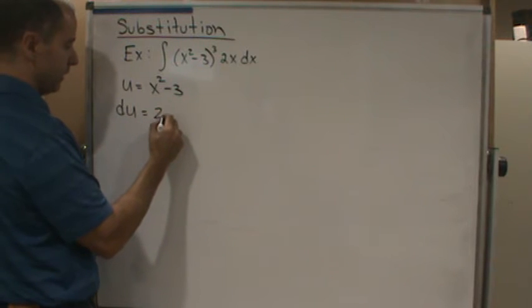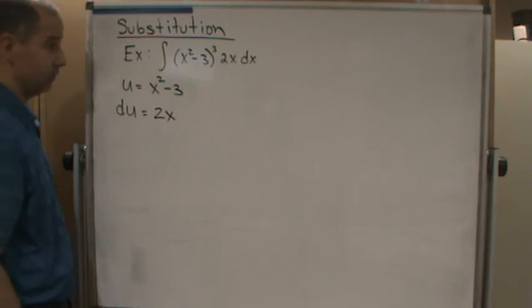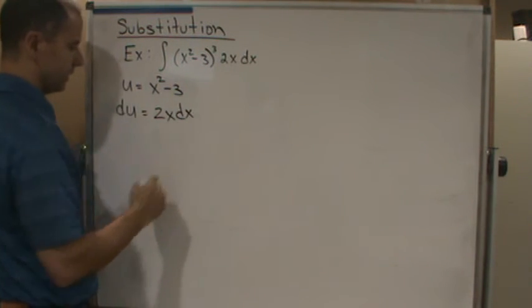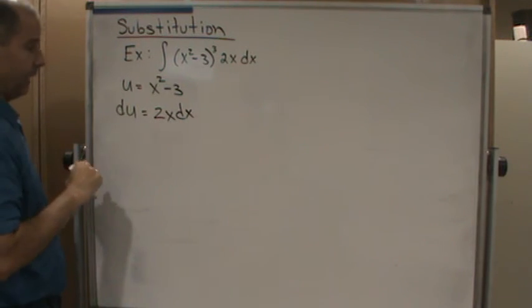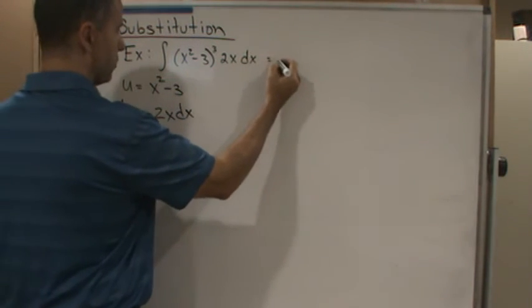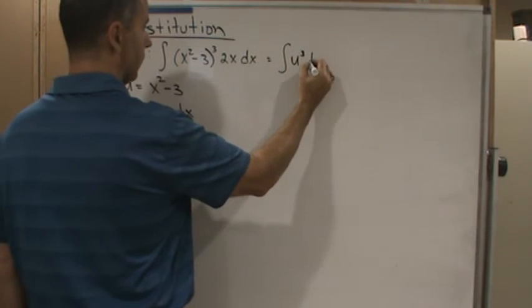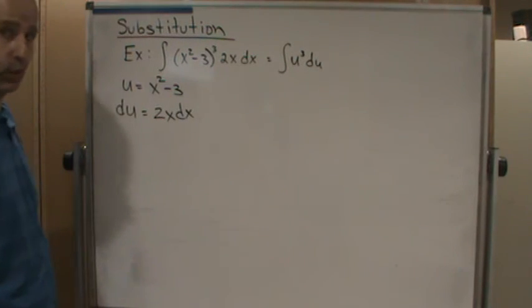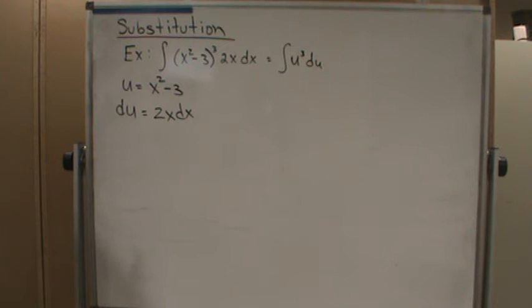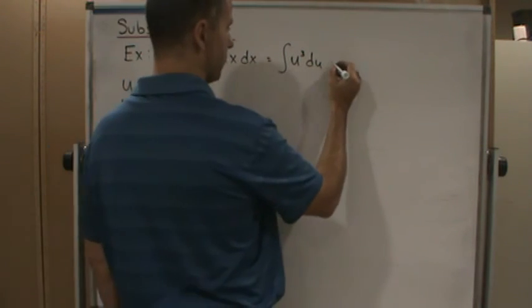And then du still gives me my 2x dx. So now I can do my u-substitution and I get the integral of u cubed du, which is really nice to integrate.